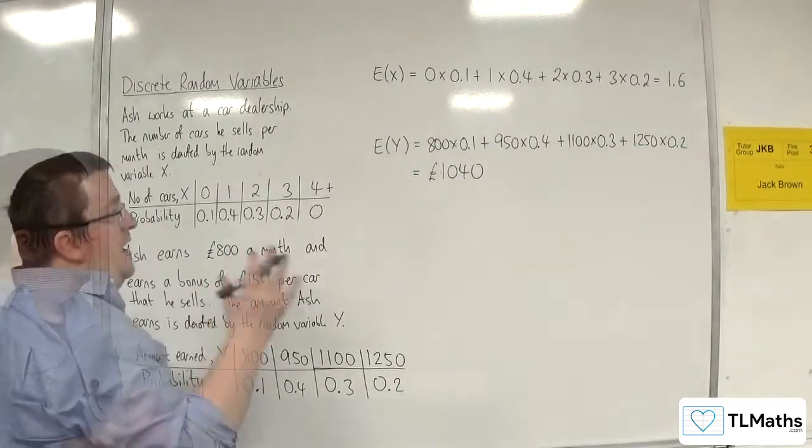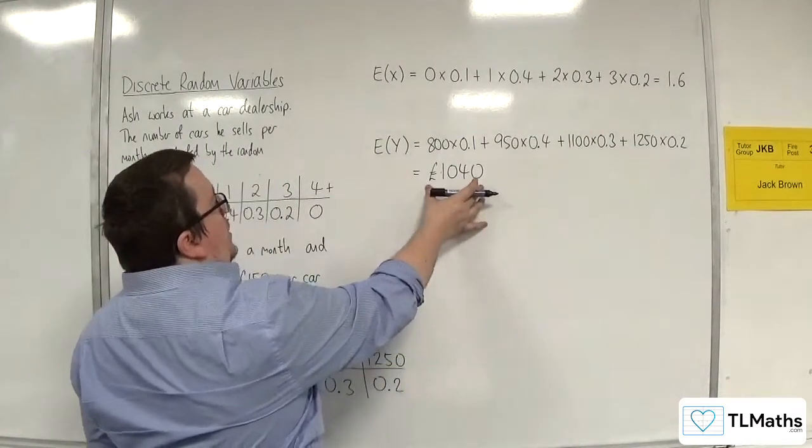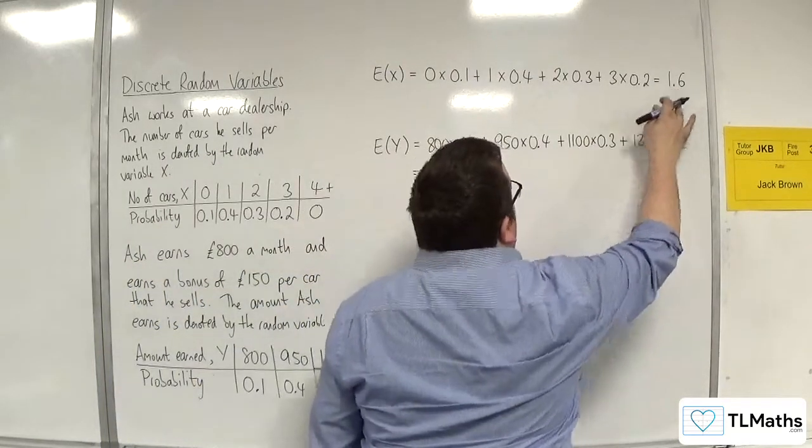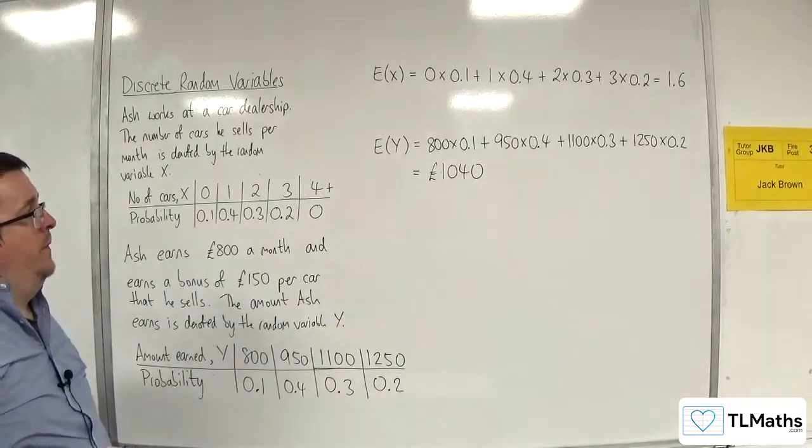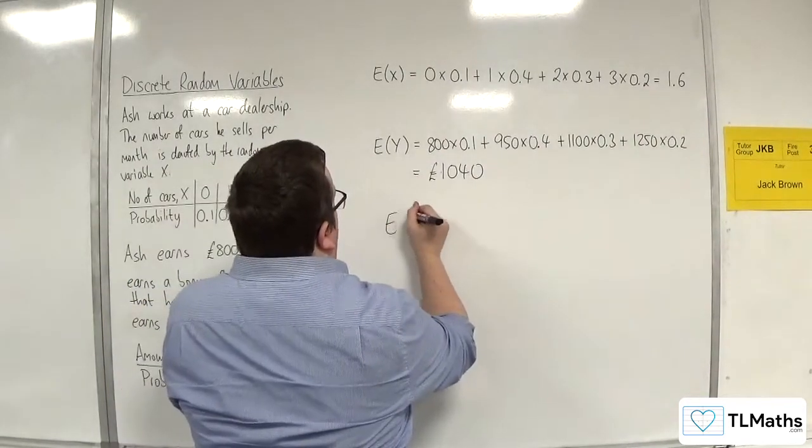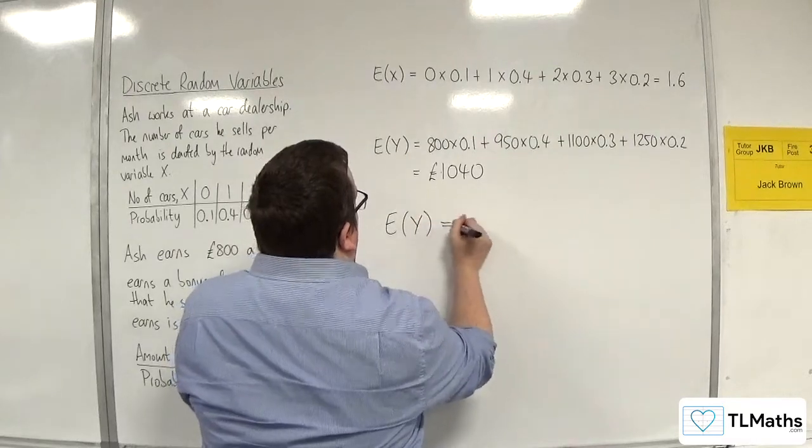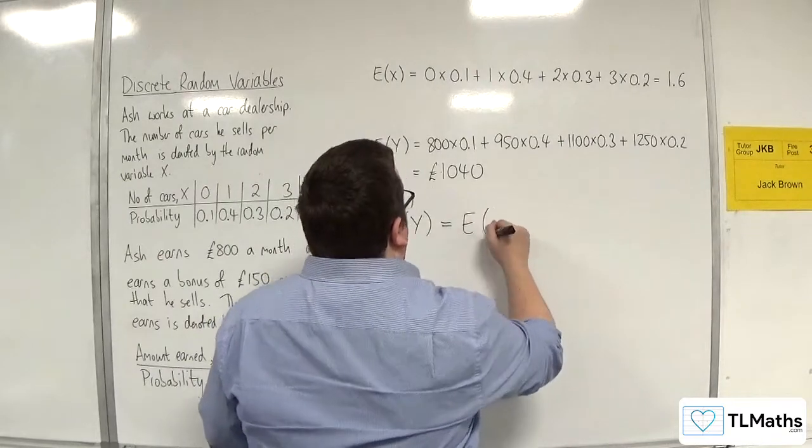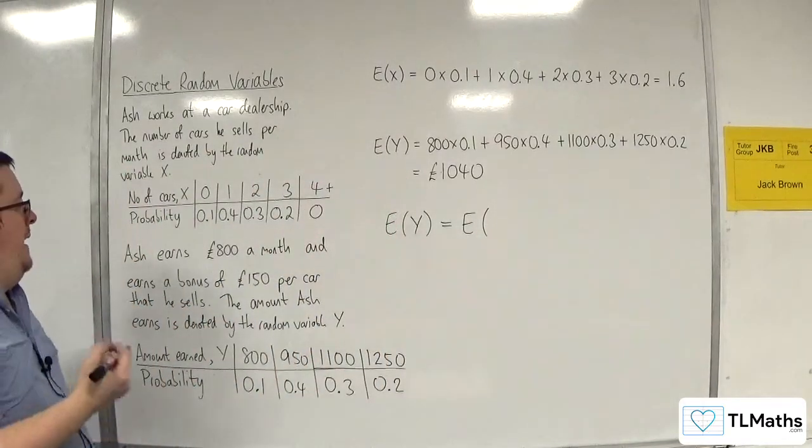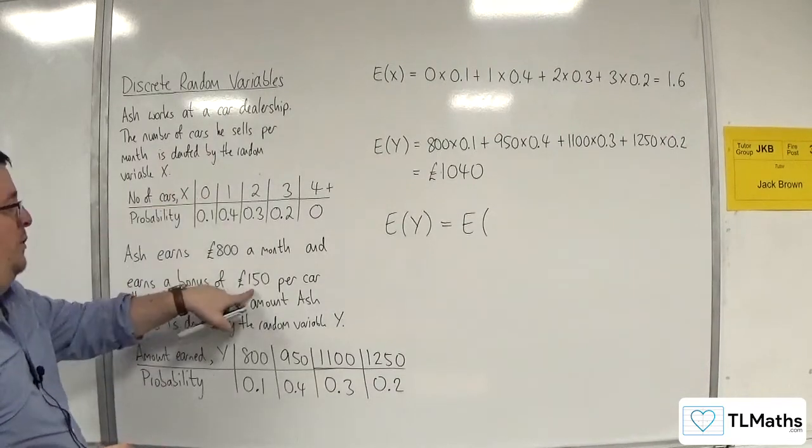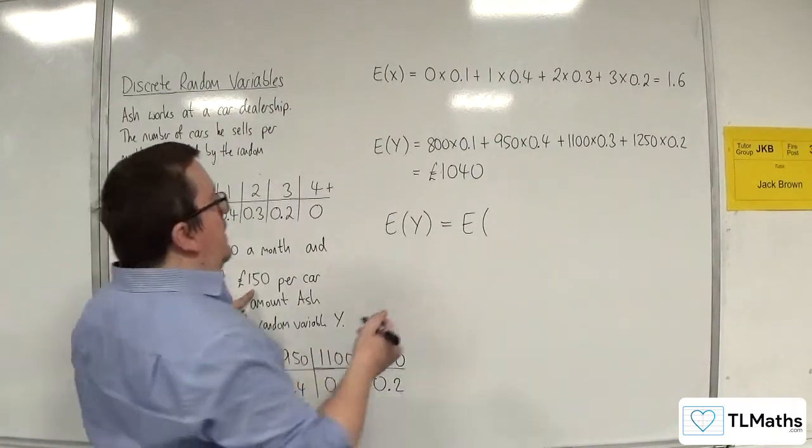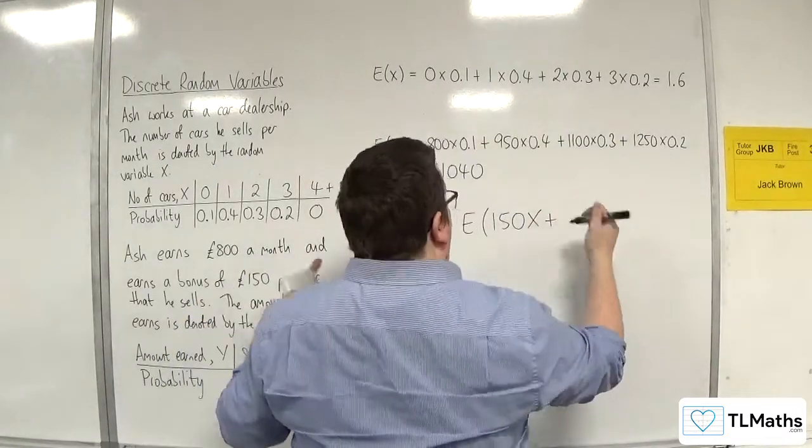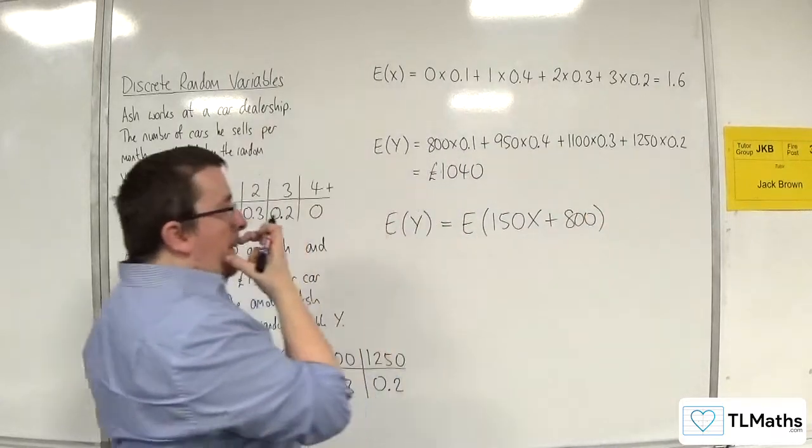So, now we want to see is there any connection between the 1040 that we've got there and the 1.6 that we have there. So, what we want to think about is with E of Y, what was Y? Well, what we've done is we have multiplied each of the X's. So, the number of cars gets multiplied by 150. So, that's 150X. And then there's that base salary of 800.